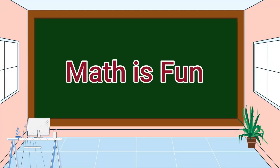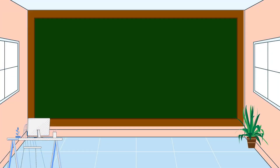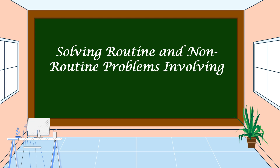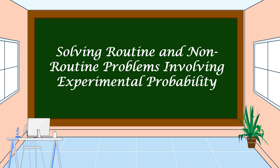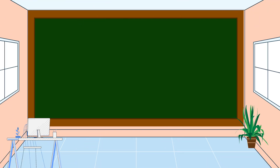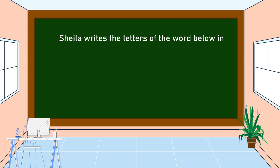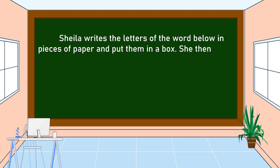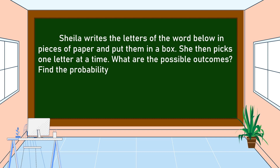Hello everyone, welcome to Math is Fun. Our lesson for today is all about solving routine and non-routine problems involving experimental probability. This is our problem: Sheila writes the letters of the word mathematics on pieces of paper and puts them in a box. She then picks one letter at a time. What are the possible outcomes? Find the probability of drawing M, a vowel, and a consonant.